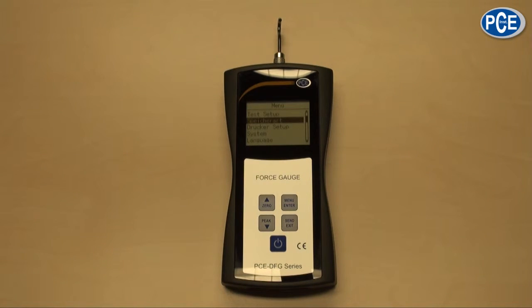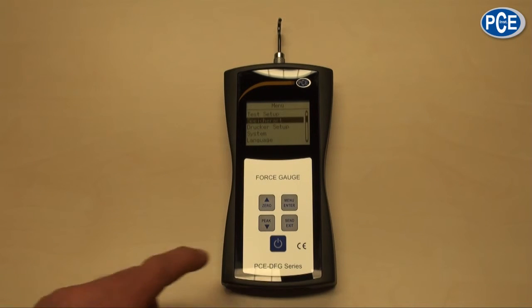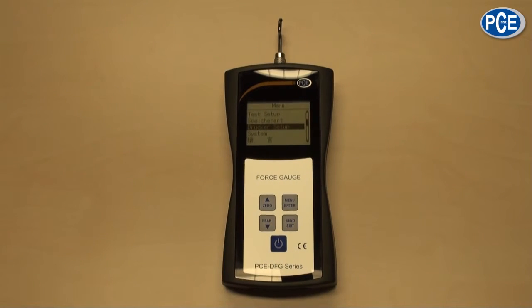In the mode memory area I can choose if I only want to save one measurement or a continual measurement, and I can look at the saved values or delete them. In the printer setup, I can print the saved data over the RS-8 interface.